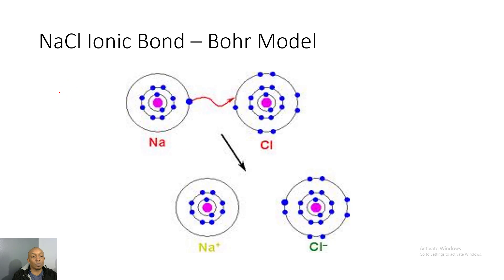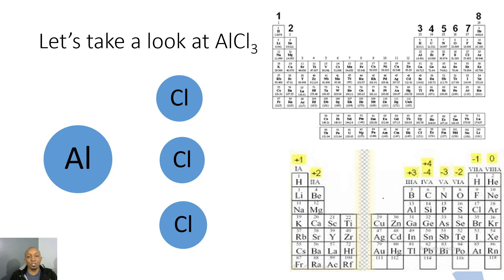Here is the same chemical formula shown using a Bohr model, which actually shows why the elements become stable. Sodium gives its one valence electron to chlorine. When that happens, sodium's outermost electron is gone and now sodium has eight valence electrons, making it stable. Chlorine had seven valence electrons but gained one, so now it also has eight — making it stable too.